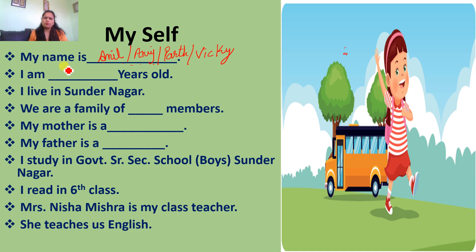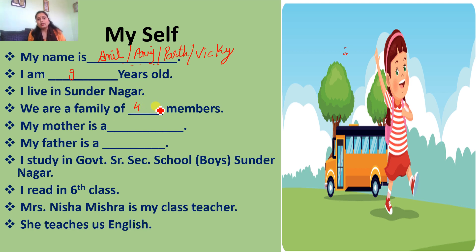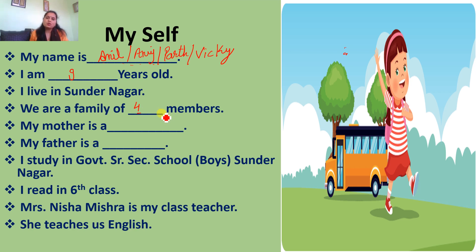'I am ___ years old' — जो भी जितने साल के आप हैं, वो लिखेंगे। For example, you are eight years old — I am eight years old. अगर nine years के हैं, तो I am nine years old। 'I live in Sundarnagar.' 'We are a family of ___ members' — आपकी family में जितने members हैं वो संख्या लिखें। For example, आप, आपके भाई-बहन, माता-पिता, दादा-दादी — तो we are a family of four members या six members जितने भी हों।